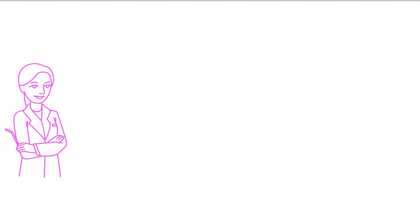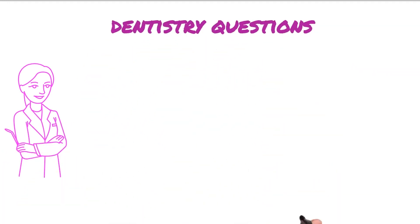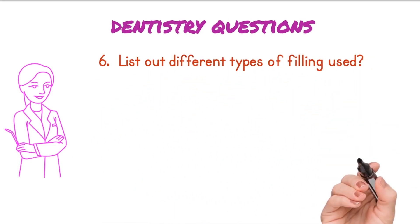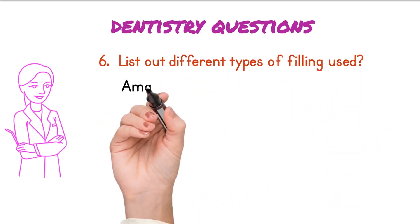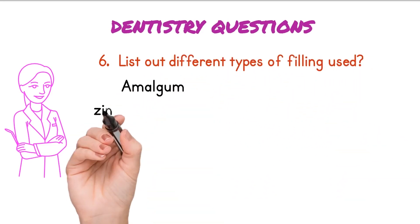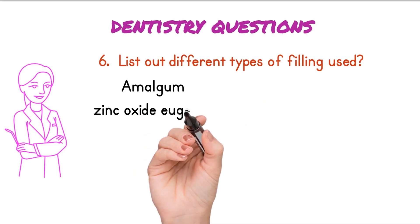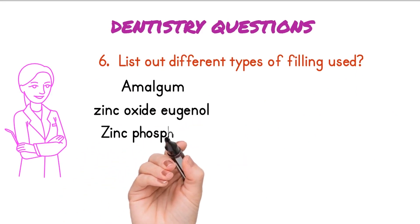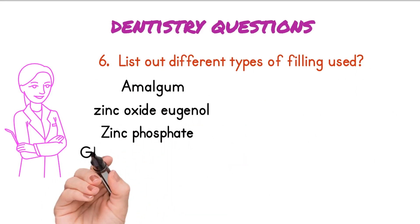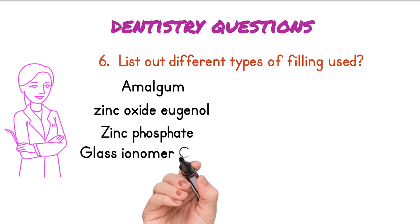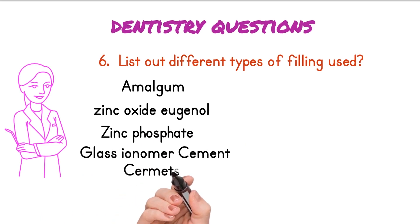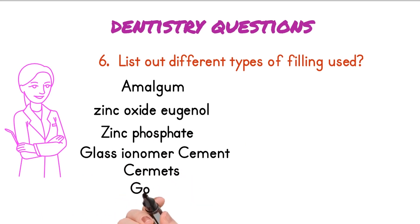List out different types of filling used. Different filling materials are: amalgam, zinc oxide eugenol, zinc phosphate, glass ionomer, cermets, gold, and composite resin.